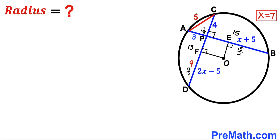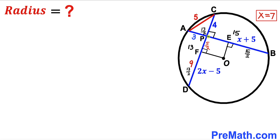Segment CF is 13 over 2, and segment CP is 4. So segment PF is 13 over 2 minus 4, which simplifies to 5 over 2. Therefore segment PF is 5 over 2. And since OEPF forms a rectangle, segment OE is also 5 over 2.